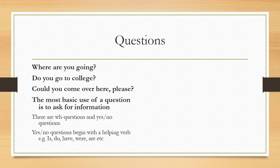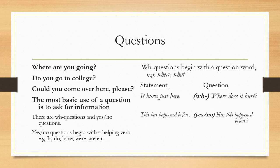The yes or no questions begin with the helping verb like is, do, have, were, and we start the sentence using them at the beginning. Whereas the WH questions begin with a question word like where, what, and so on. Now, a statement can be turned into a question. For example, it hurts just here becomes where does it hurt? This has happened before becomes has this happened before? The first form was made using the WH word, whereas the second form is a yes or no question and it started with a helping verb.